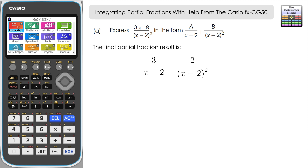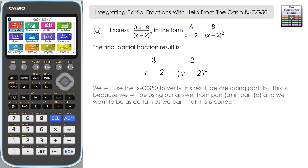Before moving on to part B, we'll use the CG50 to confirm this is correct. It appears we've done everything right, but we want to verify this is the correct partial fraction version — especially since we're going to use it in part B. We want to make sure it's definitely right so we don't carry any error forward and make subsequent mistakes.